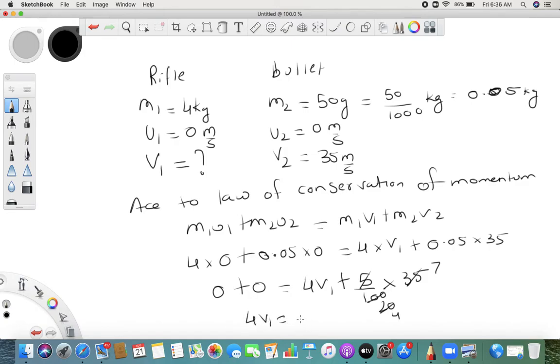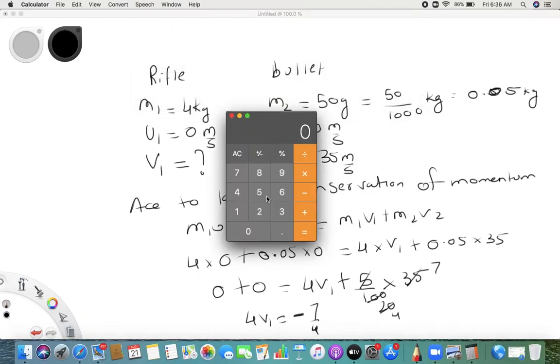0 to negative v1 plus 7 upon 4 times 35. v1 equals negative 7 upon 4, which we will calculate. 7 divided by 4, we will get 1.75.